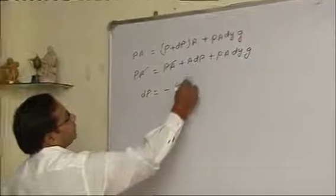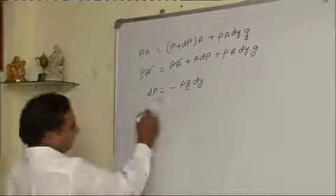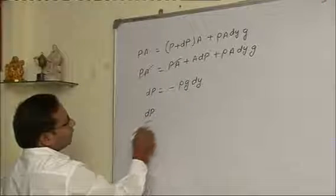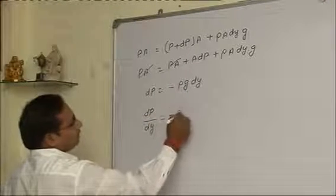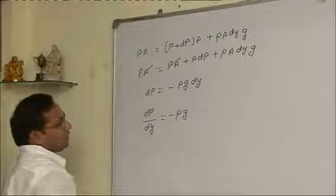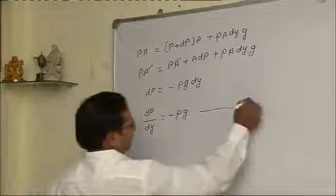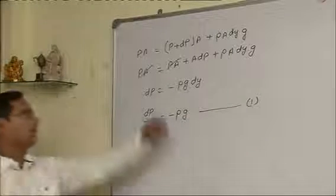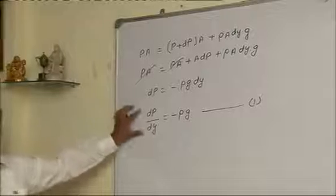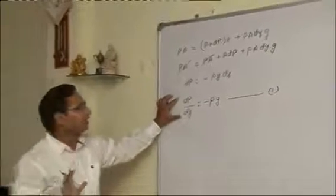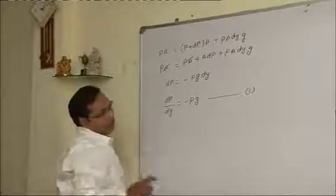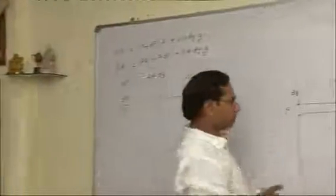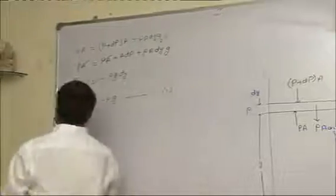dP upon dy equals minus rho g. You know what we call this? We call this pressure gradient.